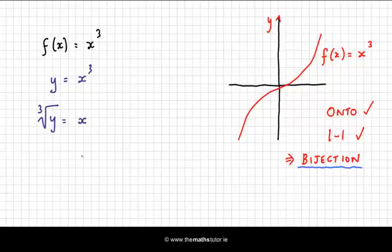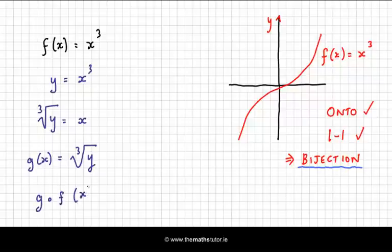And you can rewrite that as, you can make this here, g of x is equal to the cubed root of y. And then you will have the composition of the two functions together. So if you did g after f of x, you just get back to x again.